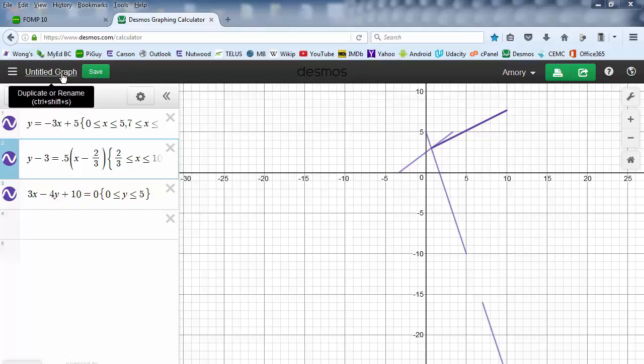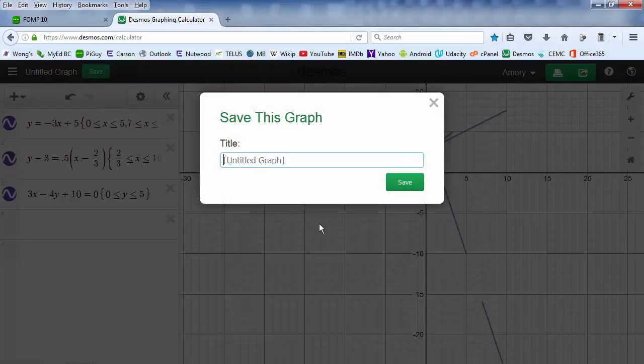Before saving, you want to give your graph a better name. So we just click on it, and we're going to type FOMP art project. And click Save.